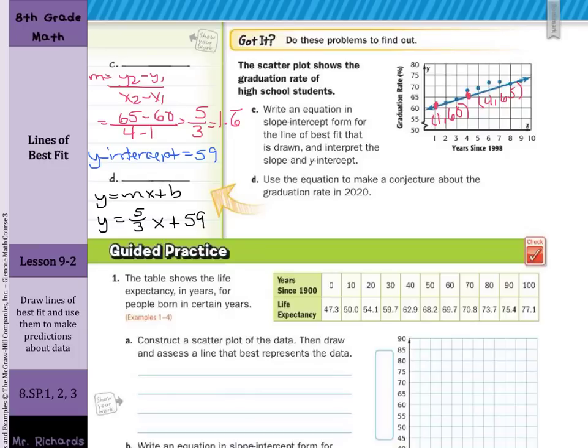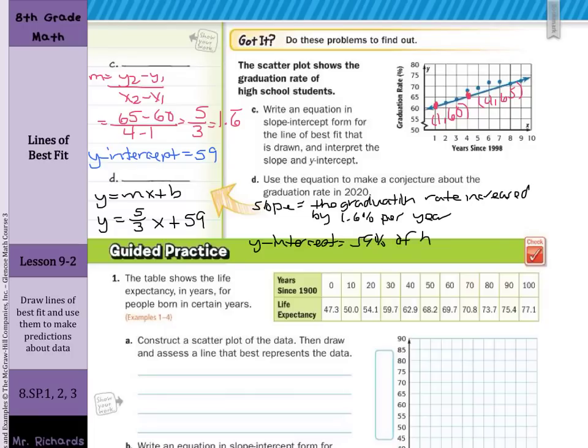Now when it comes to interpreting, our slope of 1.6 repeating or 5 thirds means that the graduation rate increased by, we'll call it 1.6 percent per year. And the y-intercept indicates that 59% of high school students graduated in 1998.